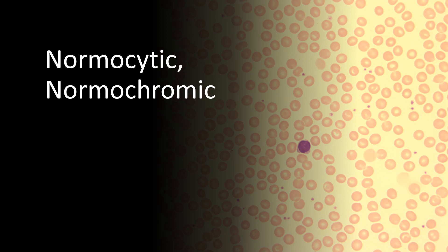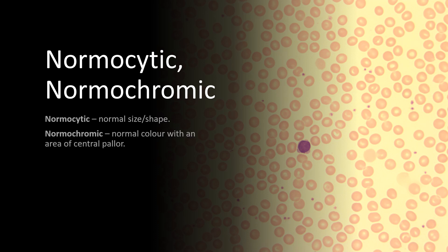Normal can be described in terms of size, color, or shape. Normocytic means the red cells are of a normal size, being between 7–8 micrometers in diameter. On the full blood count, normocytic red cells would have an MCV, or mean corpuscular volume, of 80–100 femtolitres. The word used to describe the normal color of red cells is normochromic. This is linked to the amount of haemoglobin present within the cell and is reflected on the full blood count by the MCH and the MCHC.